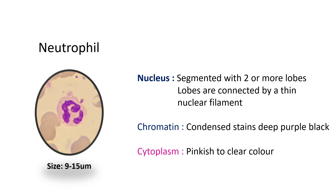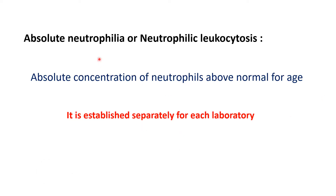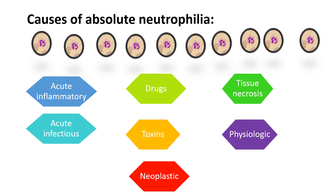Absolute neutrophilia or neutrophilic leukocytosis is when the absolute concentration of neutrophils is above normal for age — greater than 7000 cells per cubic millimeter. This value can change for each laboratory based on the population in the surrounding area.